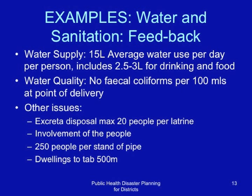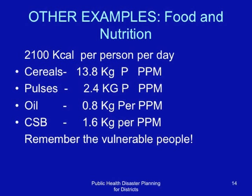Refer to your SPHERE standards manual with regard to food and nutrition. 2,100 kilocalories per person per day is recommended. With regard to cereals, about 14 kilograms per person per month is needed. Pulses — that is items like beans and peas — about 2.4 kilograms per person per month. Oil: 0.8 kilograms per person per month. And the Koyasan blend: about 1.6 kilograms per person per month. Remember the vulnerable people.